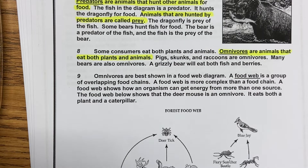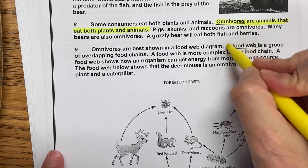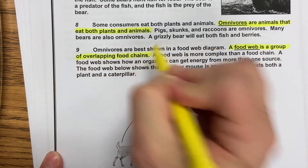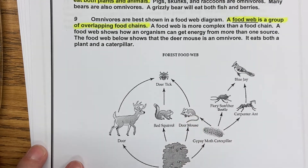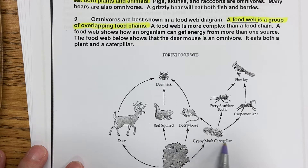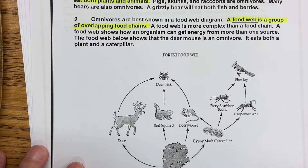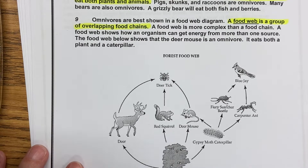Paragraph nine: Omnivores are best shown in a food web diagram. A food web is a group of overlapping food chains. A food web is more complex than a food chain. A food web shows how an organism can get energy from more than one source. The food web below shows that the deer mouse is an omnivore — it eats both a plant and a caterpillar. So our new word is food web, and it's just a group of overlapping food chains. They're talking about this little deer mouse right here. The arrow from the red oak is going into the mouse, meaning the mouse eats the red oak, but the gypsy moth caterpillar is also going into the deer mouse. With the food web we can see animals that eat more than one thing, which is actually more accurate.